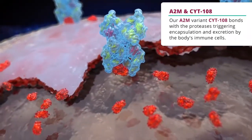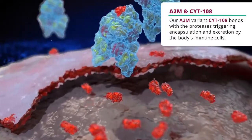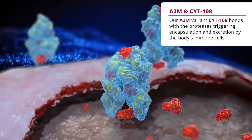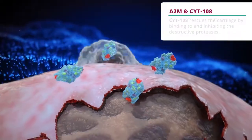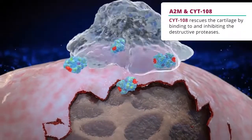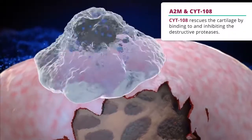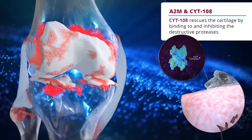When injected into the joint cavity, our engineered A2M variant CYTE-108 bonds with the proteases, triggering encapsulation and excretion by the body's immune cells. CYTE-108 rescues the cartilage by binding to and inhibiting the destructive proteases.